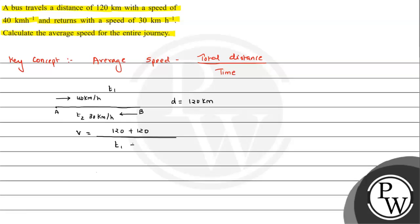So what can we write about T1? It will be T1 plus T2. So this will be basically 240 divided by T1. What can we write about T1? 120 distance upon speed 40. When we come to T2, 120 distance upon speed 30, so we are going to write distance upon speed here.